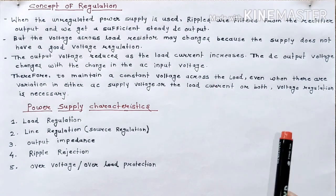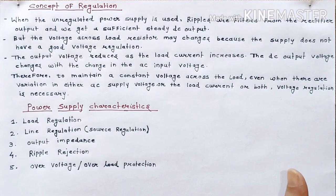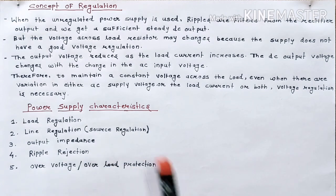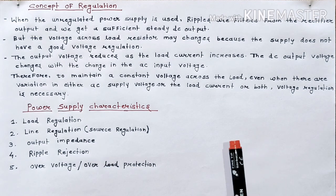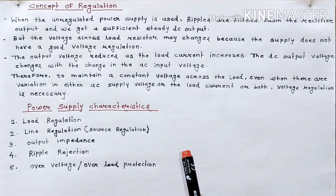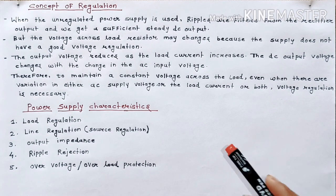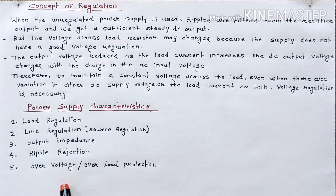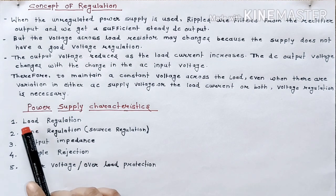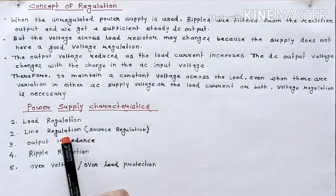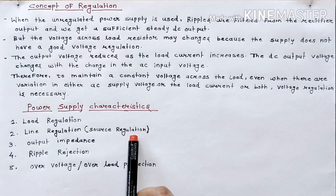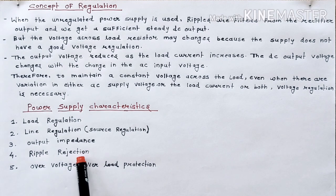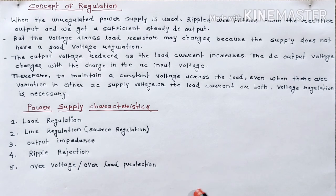Whether there is a change in supply voltage, or a change in load current, or both — we need to keep the output voltage constant. So we need voltage regulation. There are a few important characteristics of power supply for making the power supply better. We need to keep these characteristics in mind. The characteristics of power supply are: load regulation, line regulation (also called source regulation), output impedance, ripple rejection, over-voltage, and overload protection. These five characteristics are among the most important characteristics of a power supply.